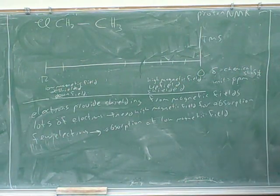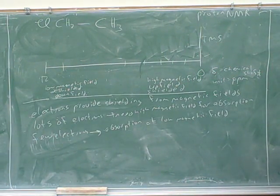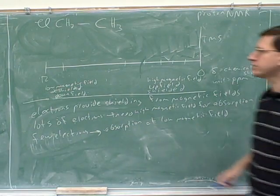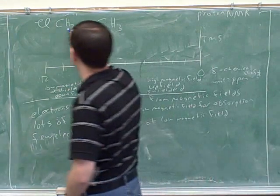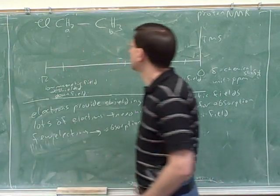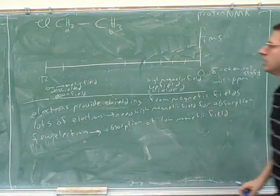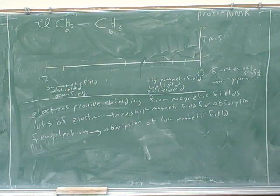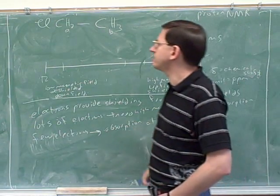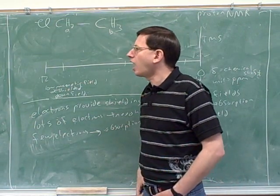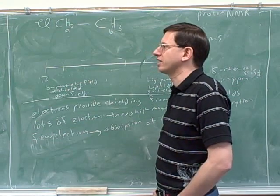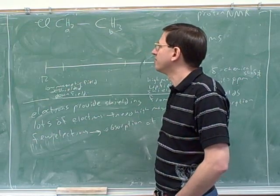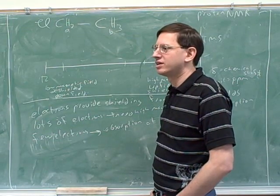Let's think about the absorptions we would get for an example compound. First of all, how many peaks would we have? Two peaks. Now, which of these hydrogens has more electrons around them?